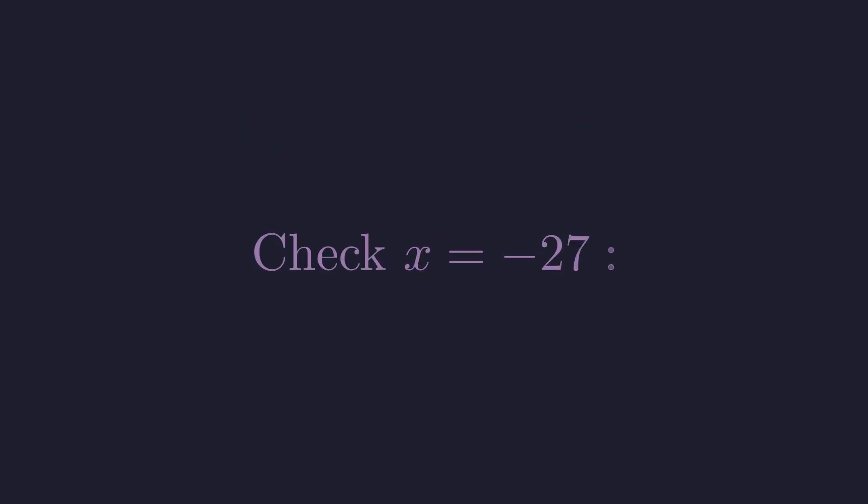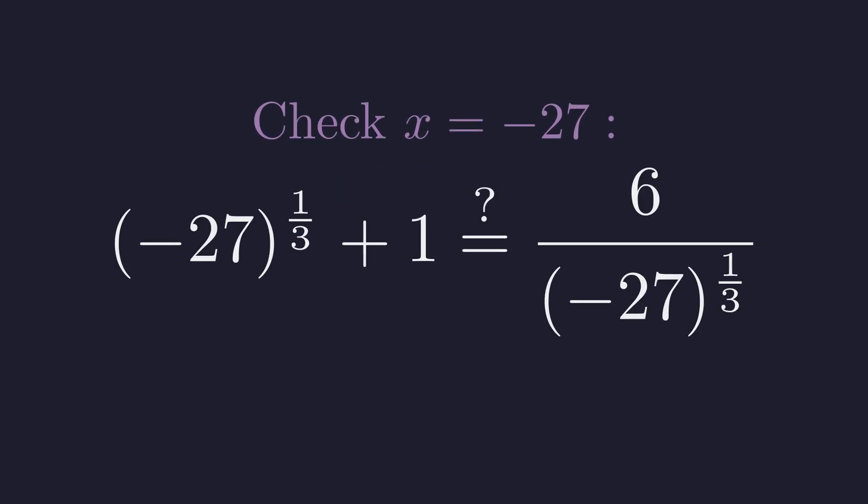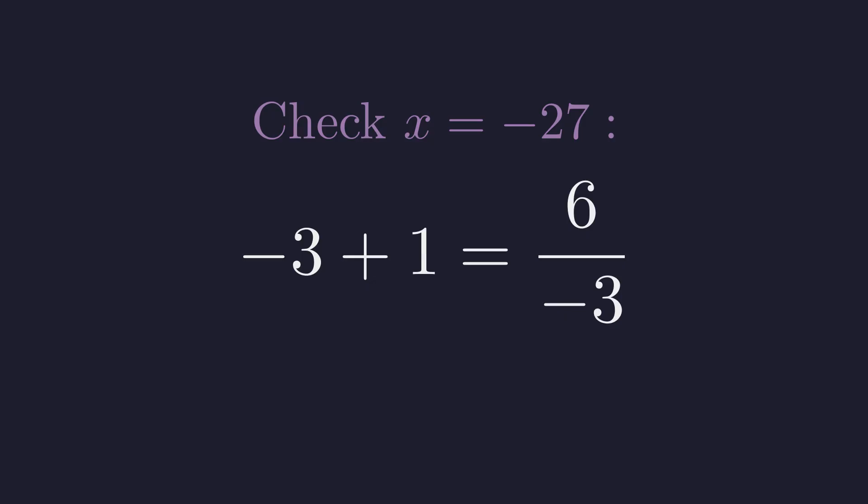Now for x equals negative 27. Does negative 27 to the one-third plus one equals six divided by negative 27 to the one-third? The cube root of negative 27 is negative three, so we get negative three plus one equals six divided by negative three. Negative two equals negative two. Great. This one checks out too.